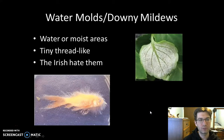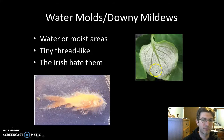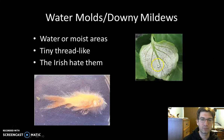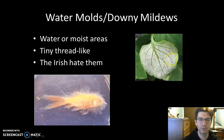Water molds and downy mildews — these are like your decomposing protists. They are going to live in moist areas as well. These are your water molds over here — these tiny thread-like things growing off of it. Your downy mildew is up here. The Irish don't like them because this downy mildew, this fungus-like protist, is actually what caused the potato famine back in Ireland. The poor people in Ireland lost all their crops and ways of living because of a downy mildew infestation.